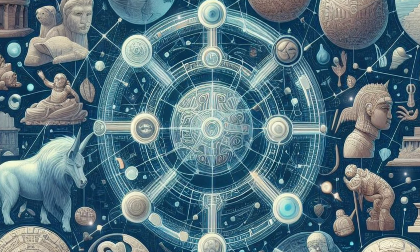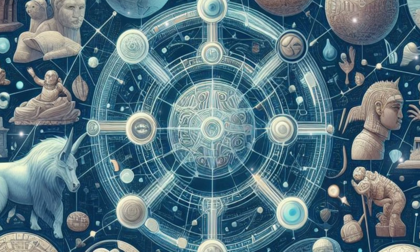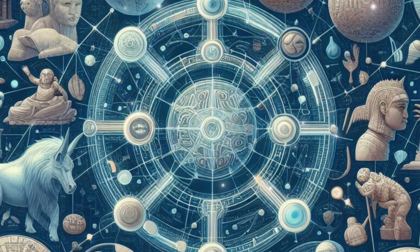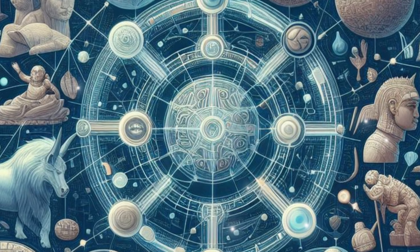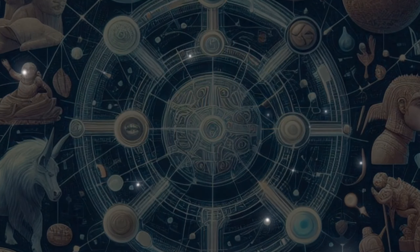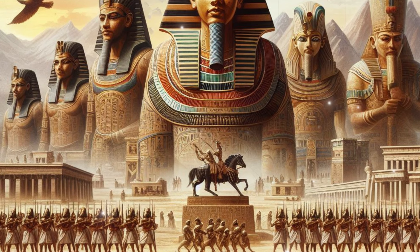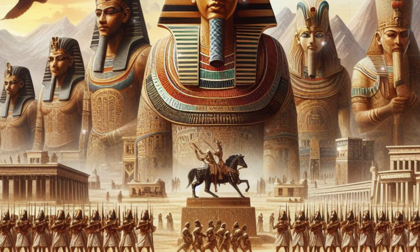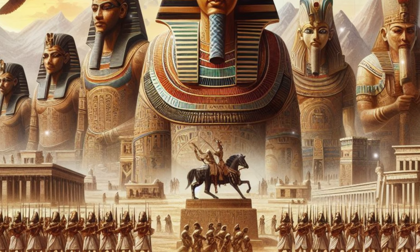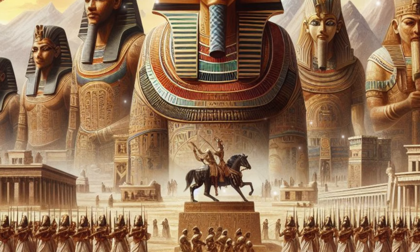The ancient Egyptian civilization had rich cultural and artistic achievements, such as hieroglyphics, pyramids, mummies, polytheism, etc., which had a profound impact on subsequent civilizations and cultures.